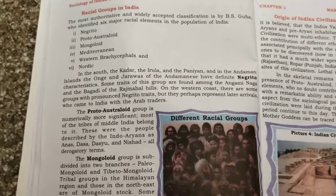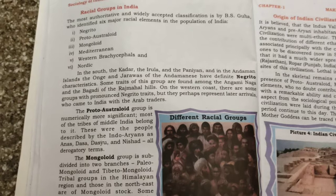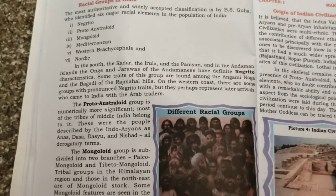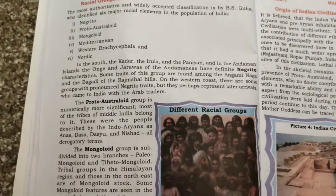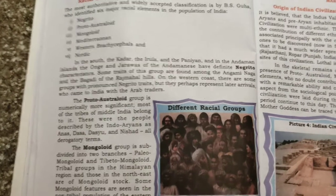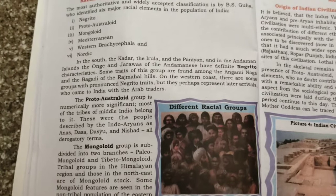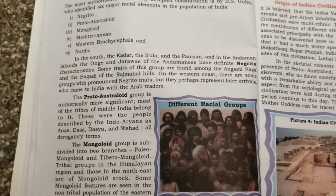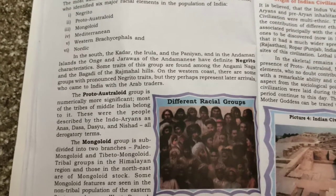Some traits of the Negrito group are found among the Angami Naga and the Bagadi of Rajmahal Hills. On the western coast there are some groups with pronounced Negrito traits, but they perhaps represent a later arrival who came to India with the Arab traders.